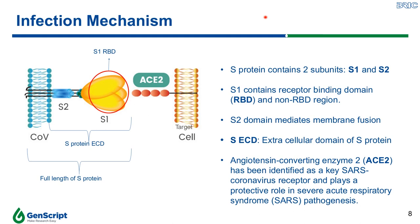How can the coronavirus hijack our human cells? The coronavirus spike proteins mediate infection through binding to a specific target receptor known as the angiotensin-converting enzyme 2, or ACE2 receptor. The spike protein contains two subunits: the S1 subunit and the S2 subunit. The S1 subunit contains the receptor binding domain and a non-RBD region, whereby the S2 subunit has been found to mediate the membrane fusion between the virus and the cell.